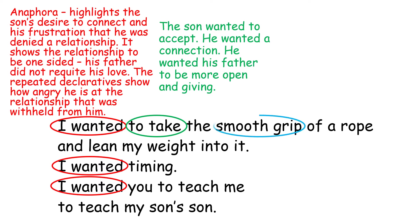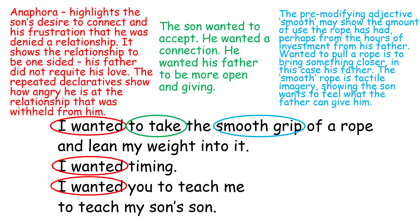The next piece of imagery describes 'the smooth grip.' We have the pre-modifying adjective 'smooth,' which may show the amount of use that the rope has had — perhaps from the hours and hours of investment that his father put into his bell ringing. Perhaps he wanted to pull the rope and that would bring his father closer to him. The adjective 'smooth' could be seen as tactile imagery here, showing that the son wants to feel what the father can give him. He wants to reenact the types of activities his father used to do and share in those memories.